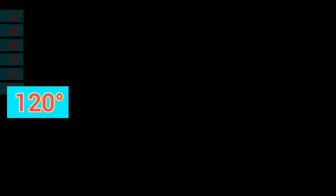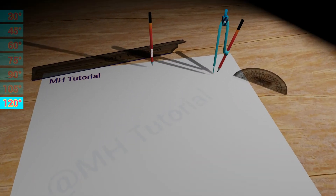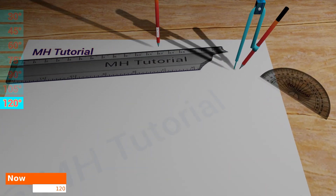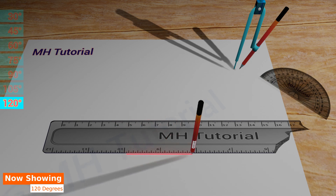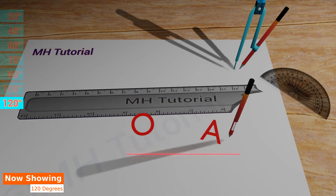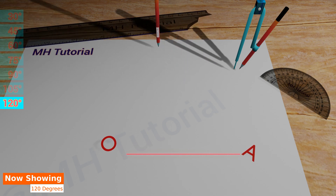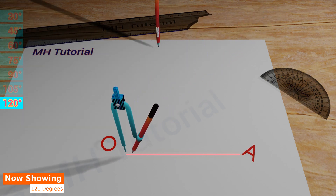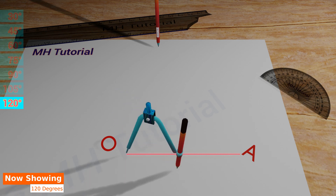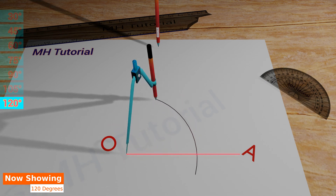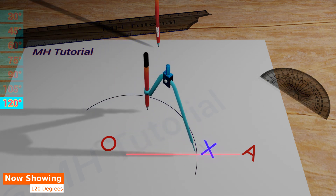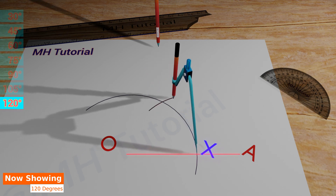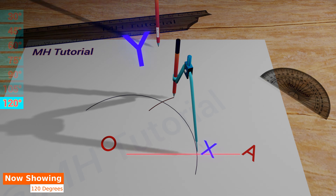For a 120 degrees angle, first of all with a scale and a pencil a line segment is drawn on the middle of the page. The two endpoints are named O and A. Next, a pencil compass is taken and a large circle arc is drawn with the tip of the compass placed at point O. The arc intersects the straight line OA at point X. Then another circle arc of the same radius is drawn with the tip placed at point X. It intersects the previous arc at point Y.